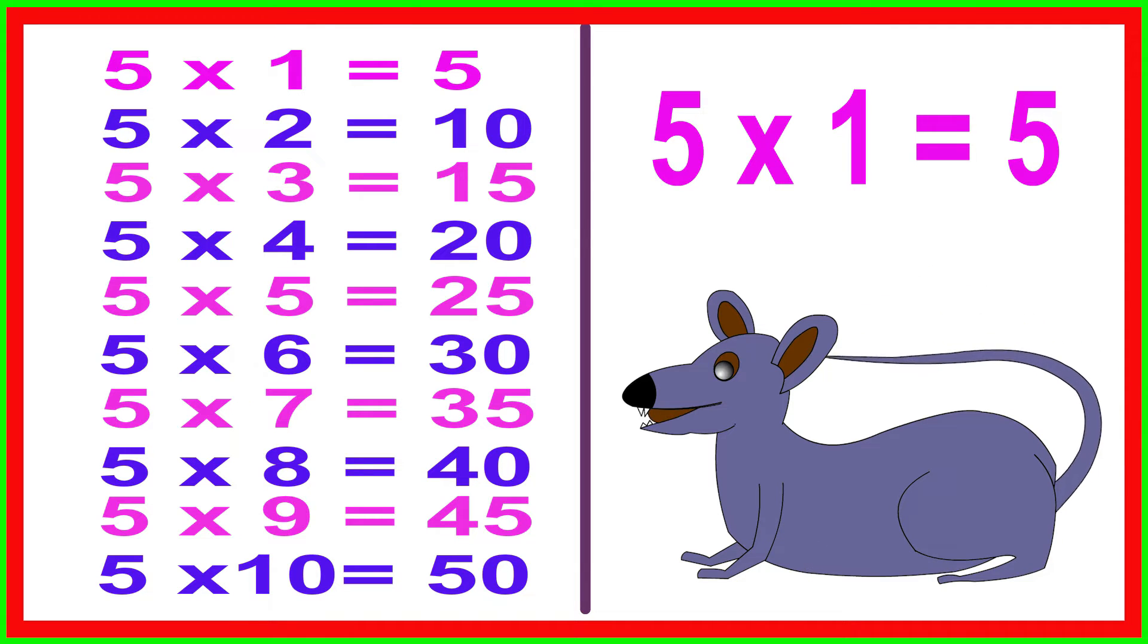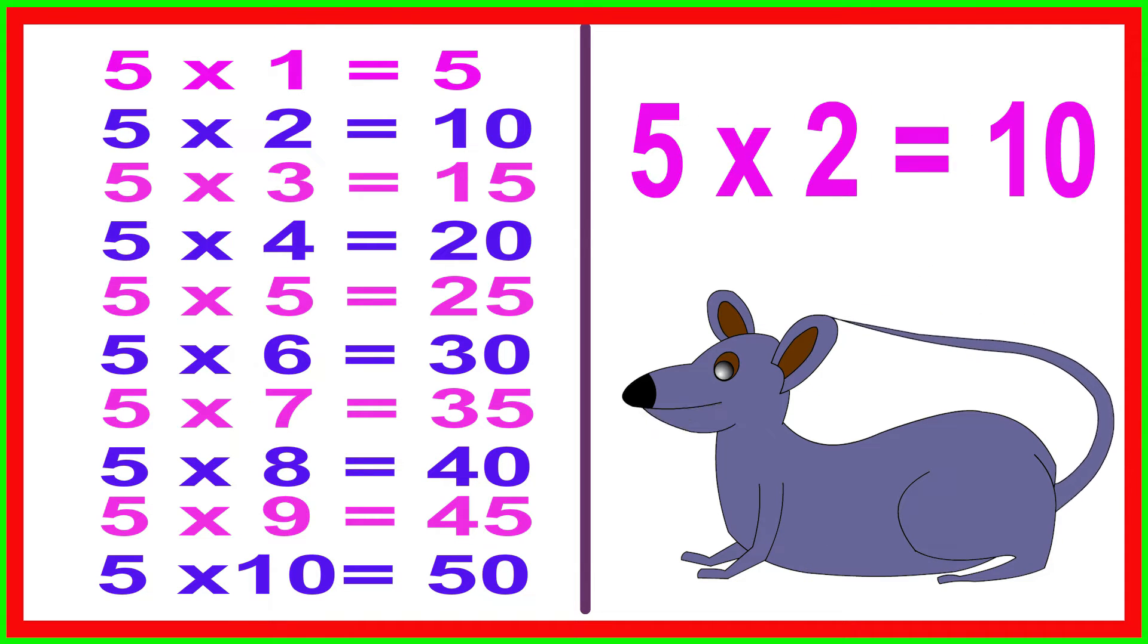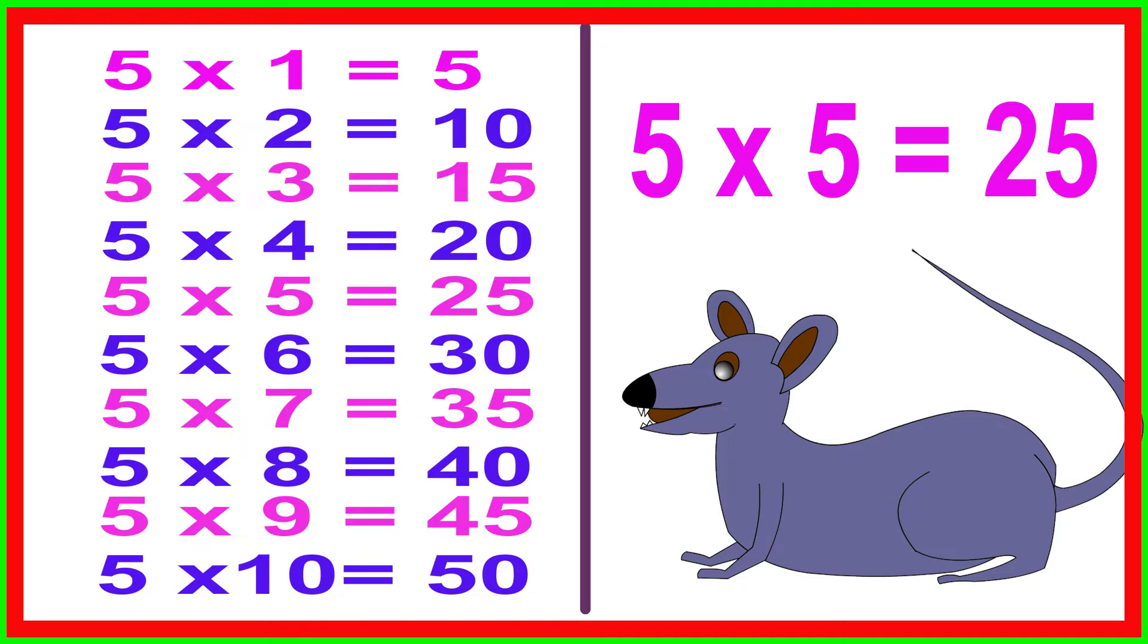5 times 1 equals 5, 5 times 2 equals 10, 5 times 3 equals 15, 5 times 4 equals 20, 5 times 5 equals 25, 5 times 6 equals 30.